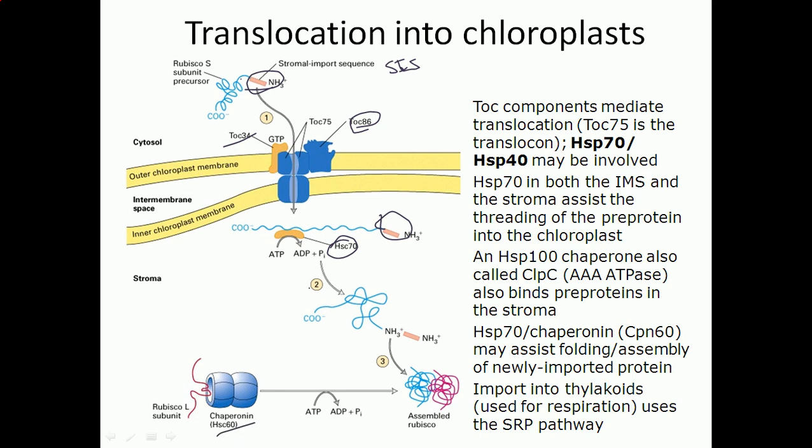Then these two folded agents—one is folded using HSC70, which is the small unit coming from outside the chloroplast, coming from cytosol, and the large subunit is folded using the HSC60 chaperonin that is present inside the stroma.